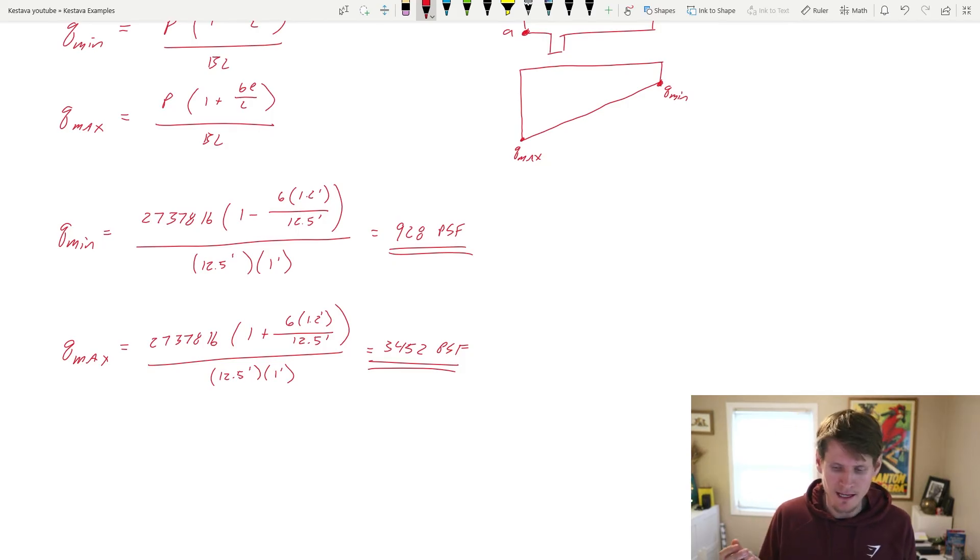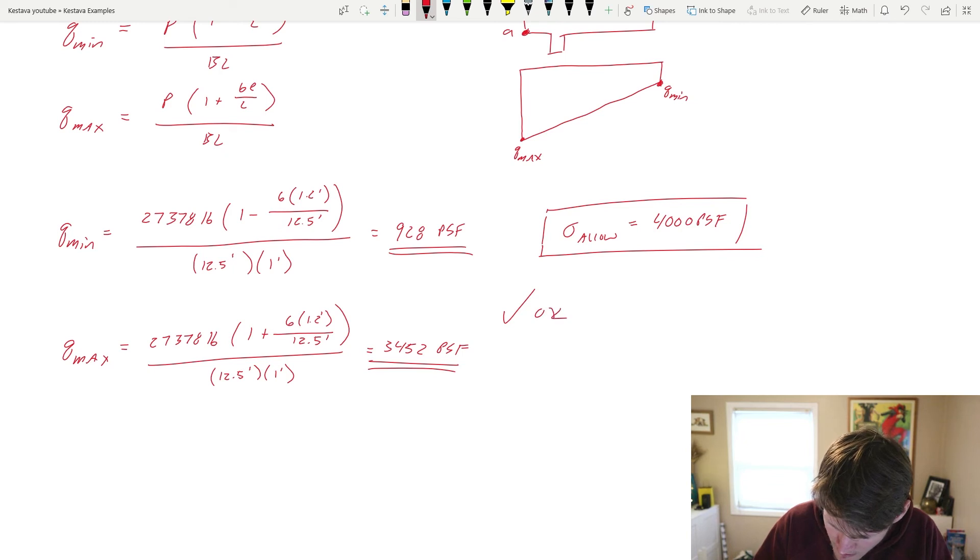And in today's example, it actually didn't give us an allowable bearing pressure that we needed to adhere to. But let's just say for today that we met our criteria, and we'll say that our allowable bearing pressure, something else that is also given in a geotechnical report, we'll say today we were looking for 4,000 PSF we had to be under. And for this, we have succeeded in doing that. So we are okay. So all of our global stability checks are met.